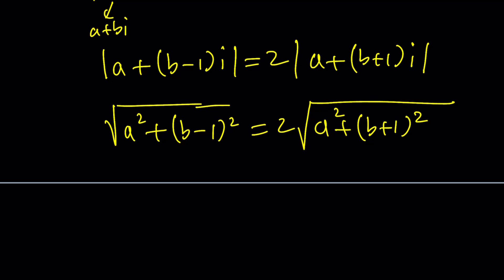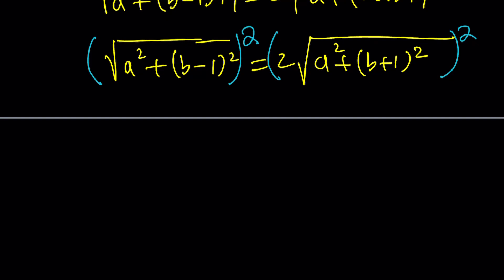Now, we did get ourselves a good equation. But let's get rid of the radicals. Without that, it will be impossible to solve. So let's go ahead and square both sides. That gives us a squared plus b minus one squared, because we got rid of the radical two squared is four. And I'm going to multiply this by a squared plus b plus one squared.